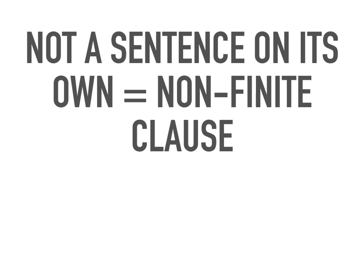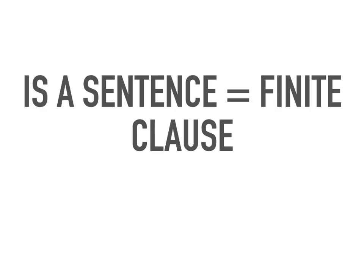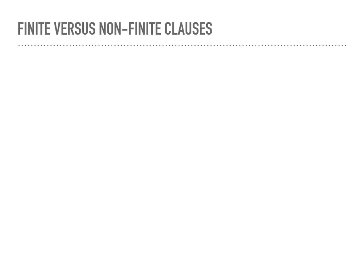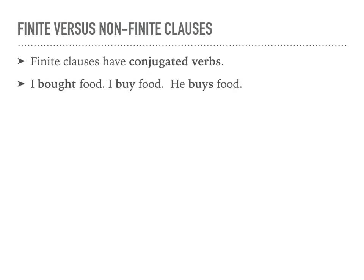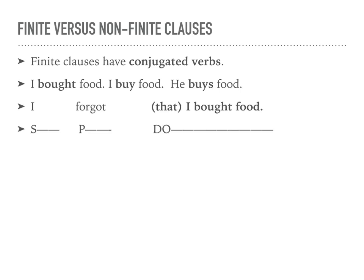But if we compare it to our next three words, 'I bought food,' we could say 'I bought food' is a sentence, and if it were in a larger sentence we would say that that's a finite clause. So let's compare the difference between finite and non-finite clauses to understand it better. Finite clauses have conjugated verbs, which means you can get sentences like 'I bought food,' 'I buy food,' 'he buys food.' All of these examples are sentences because they stand on their own. But if we put them in larger sentences — for instance, 'I forgot that I bought food' — then we would say that we have a subject 'I,' predicator 'forgot,' and 'that I bought food' which is a direct object.